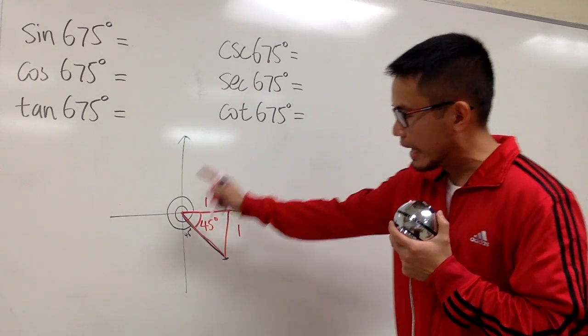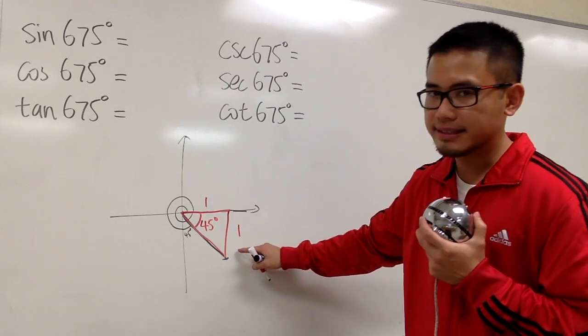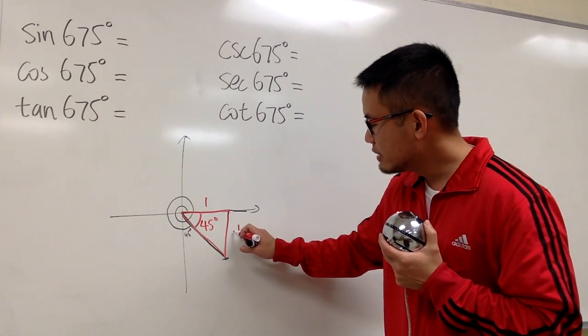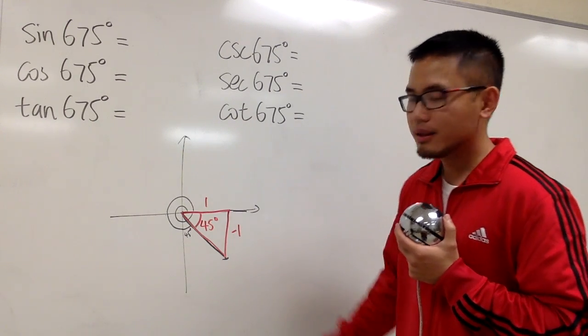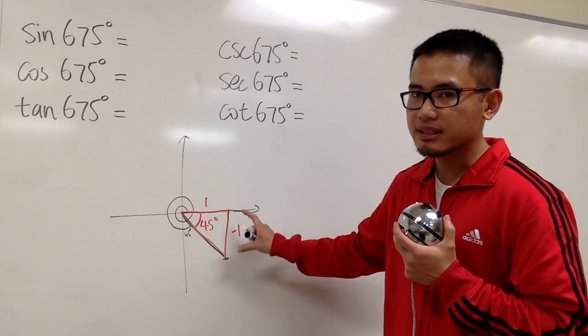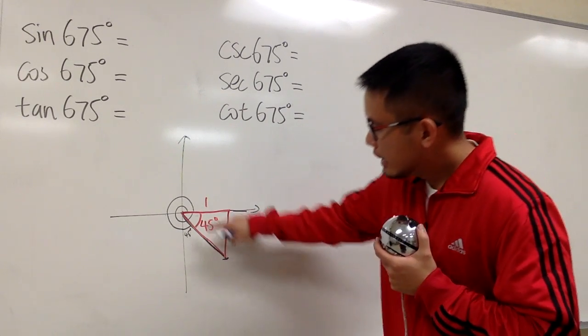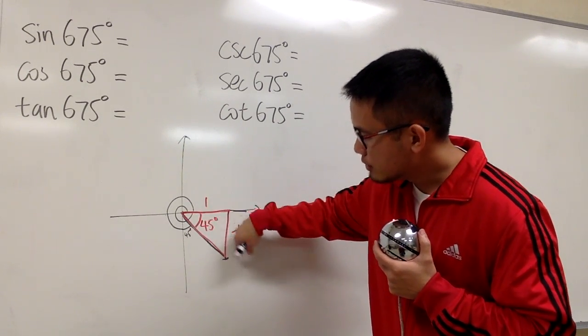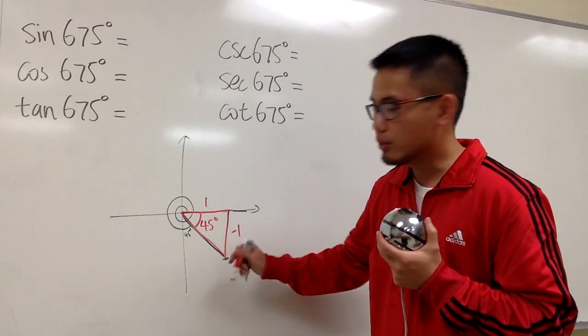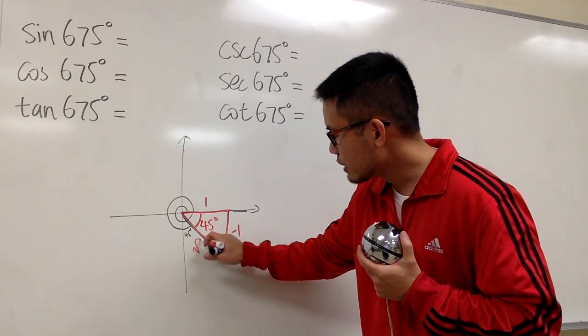Well, in this case, you see that this 1 is down below. So technically, this will have to be negative 1 because it's down below. It has negative y value. And the r right here, the hypotenuse, is going to be just square root of 2. This right here is always positive, so keep that in mind.